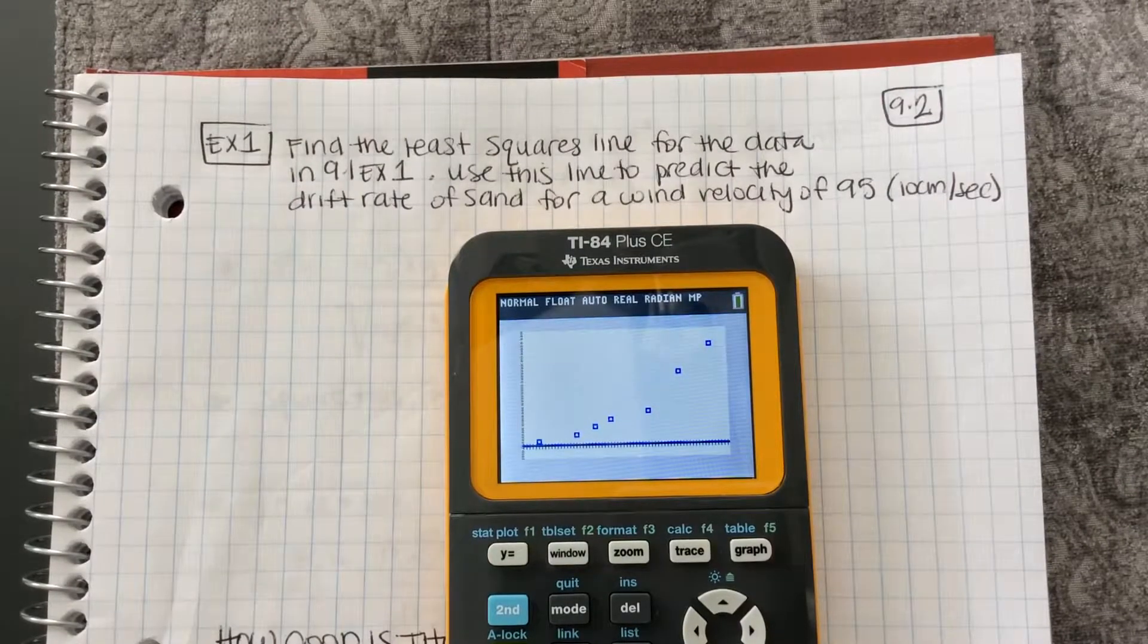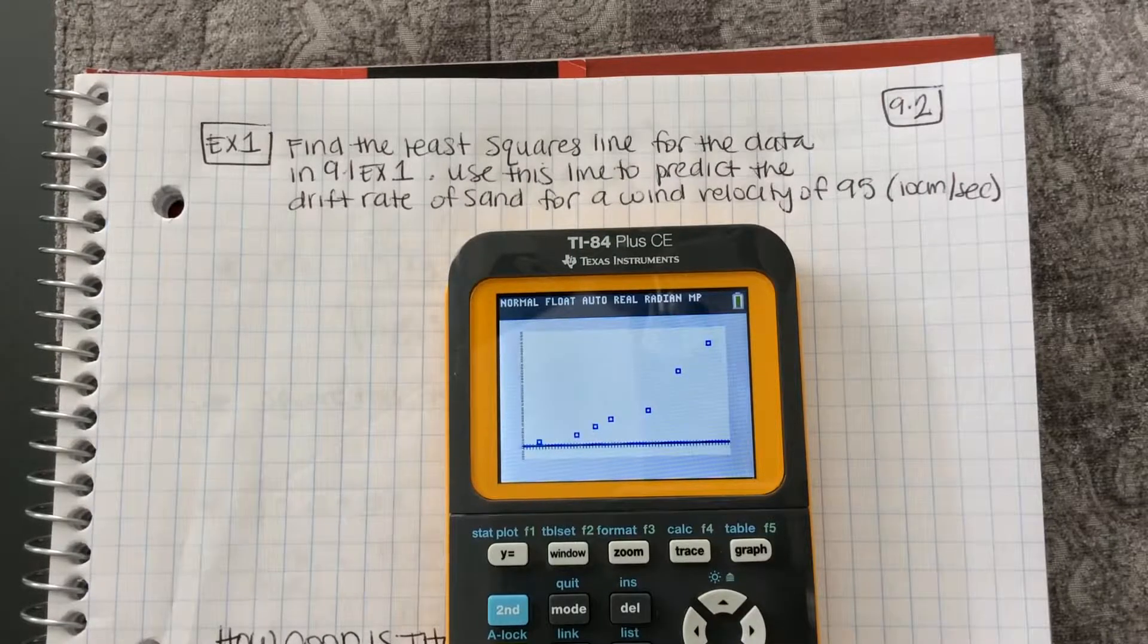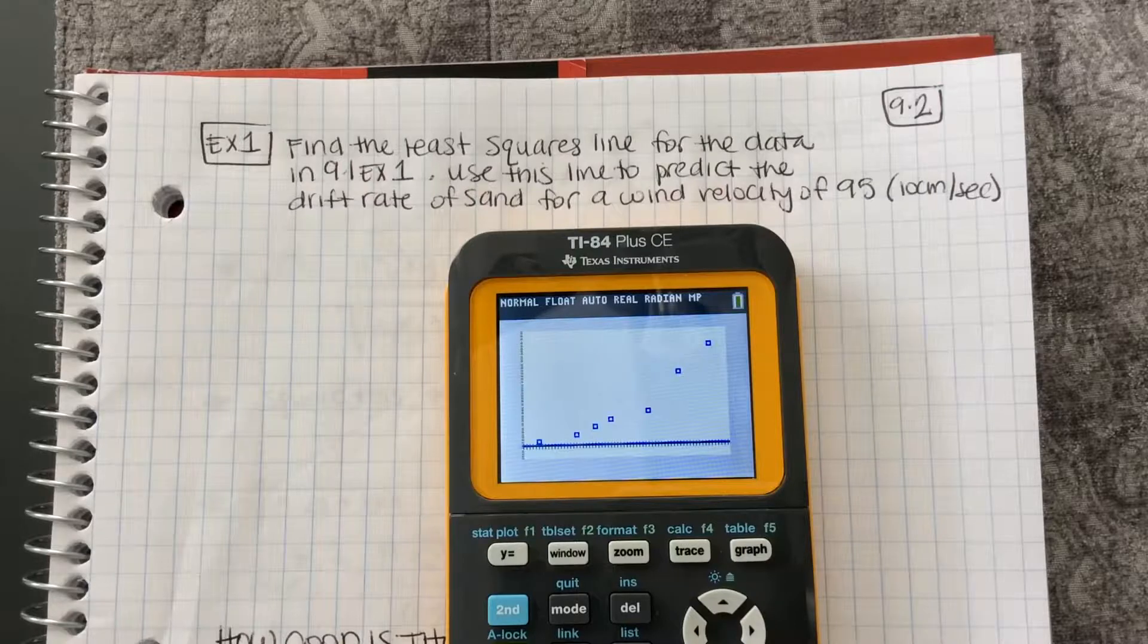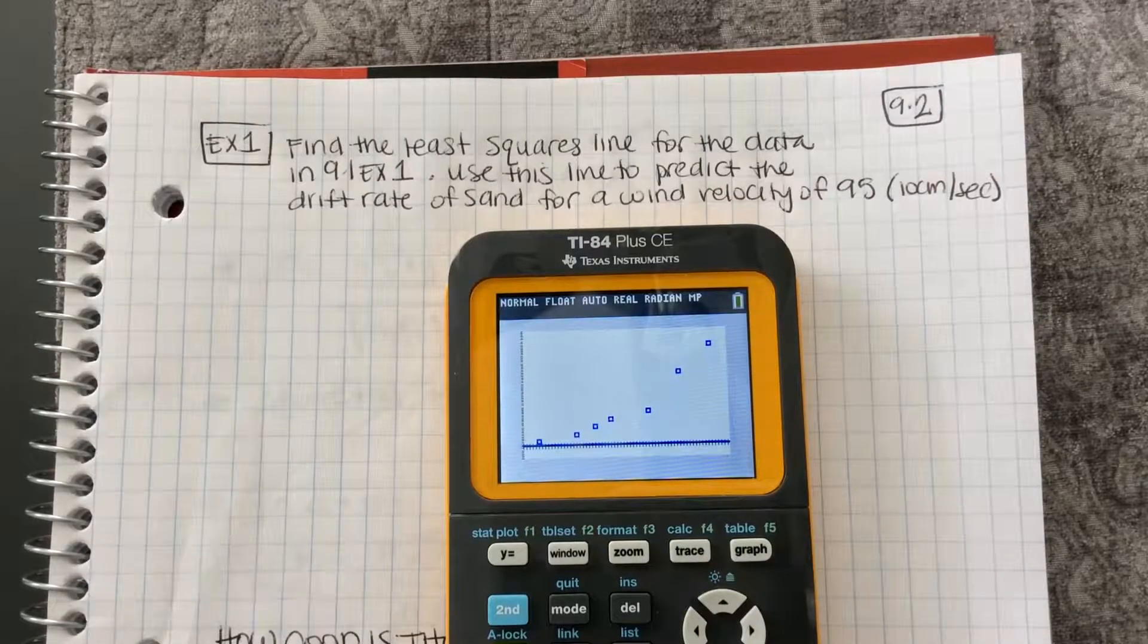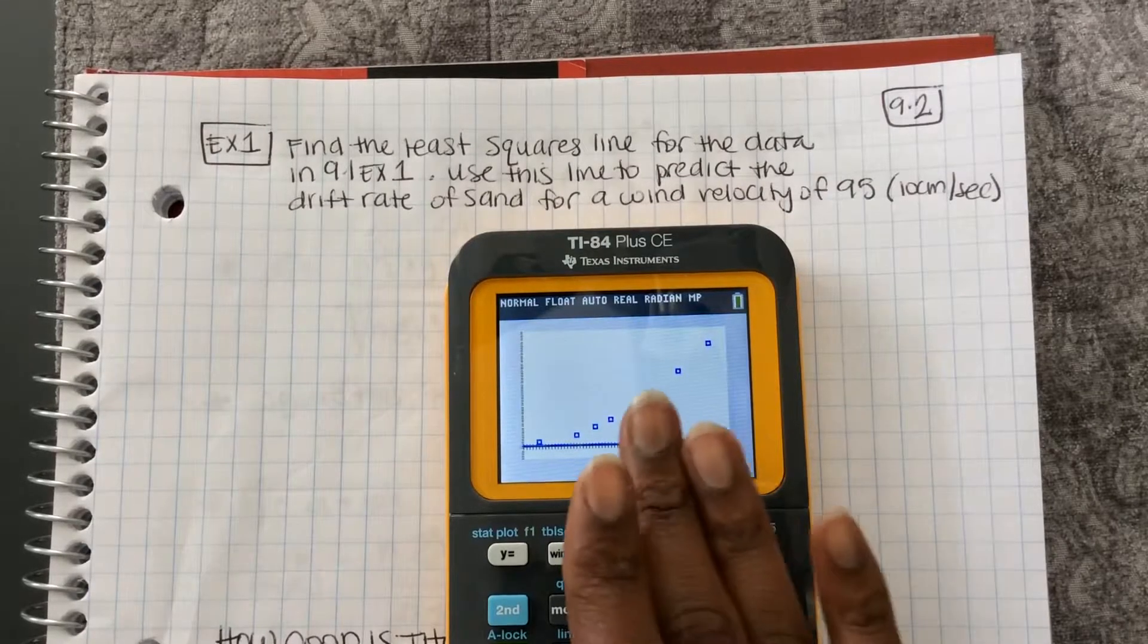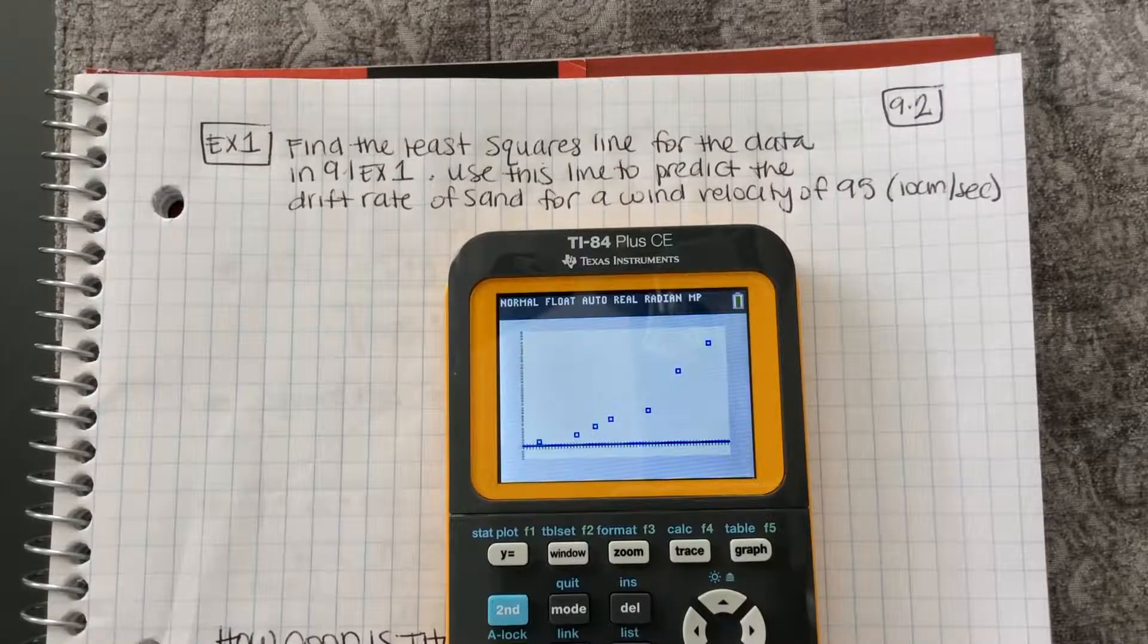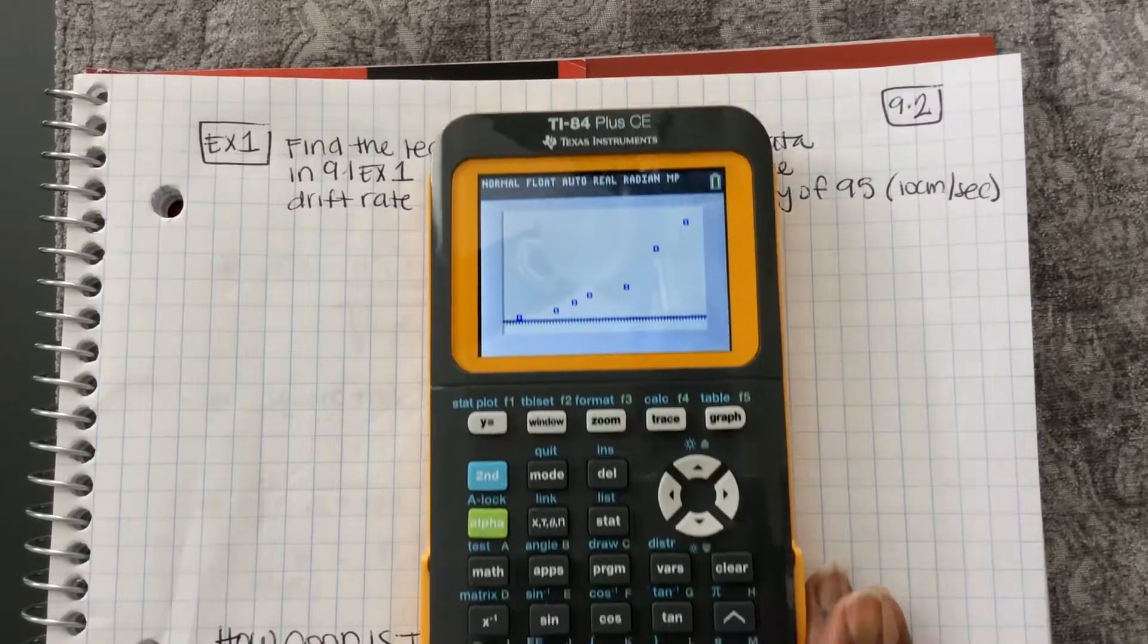Hey guys, in this video we are going to do an example where we find the least squares line for the data in 9.1 example 1. Then we're going to use this line to predict the drift rate of sand for wind velocity of 95. So here's my scatter plot we made in a previous video. So in order to do linear regression for this data,